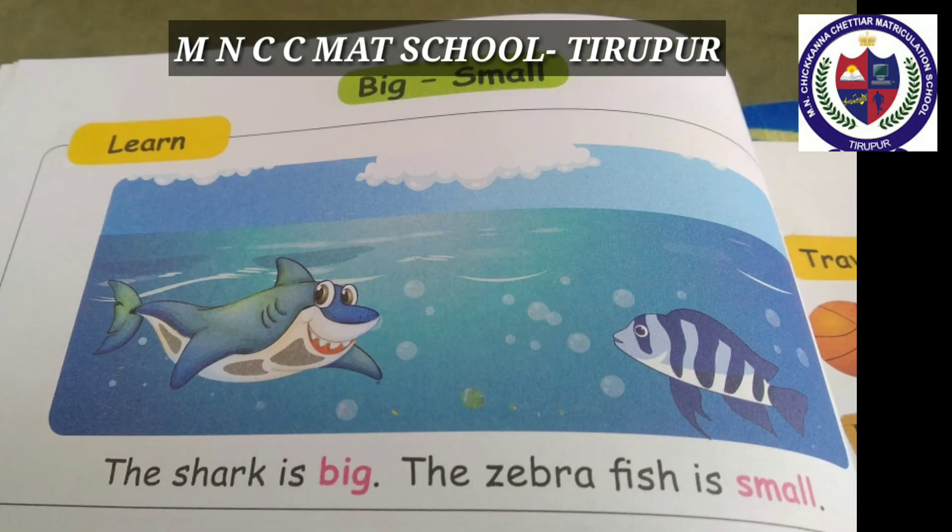Look at the picture. Big, small. The shark is big. Which is big? The shark is big. The zebra fish is small. Which is small? The zebra fish is small.